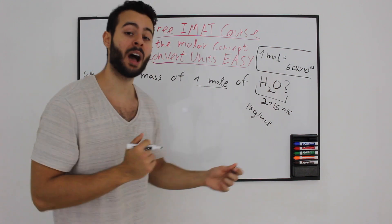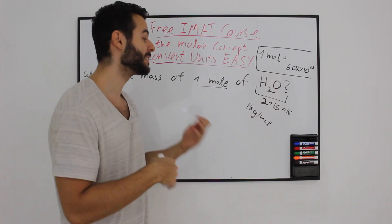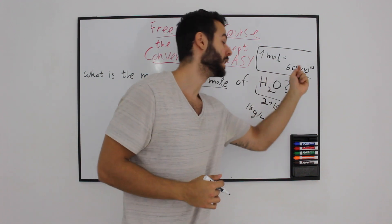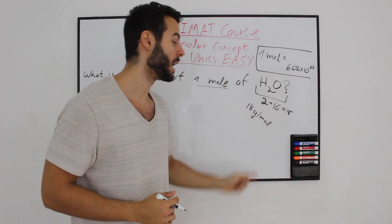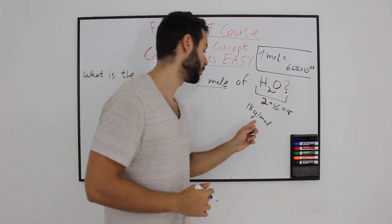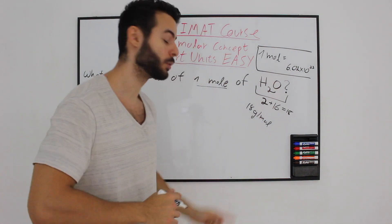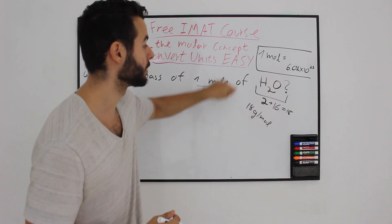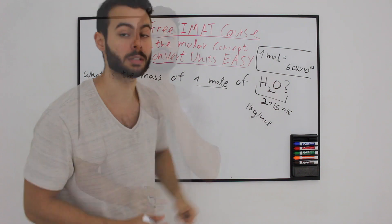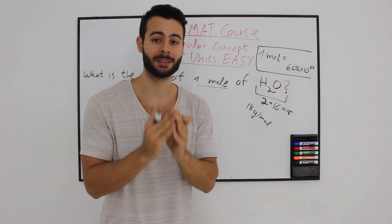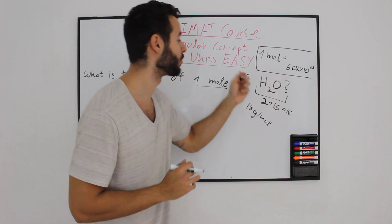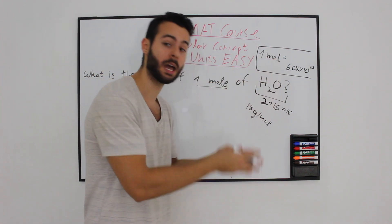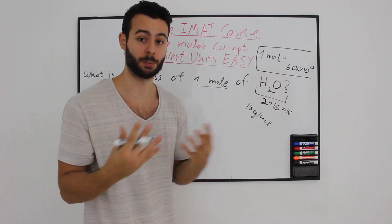How do we actually answer those questions using different methods? If you have the number of particles, you can convert them to the number of moles. If you have the number of moles, you can convert it to the number of grams. And if you have the number of grams, you can convert it to the number of particles and moles. Make sure to understand how to convert units between number of particles, number of moles, and amount of grams.